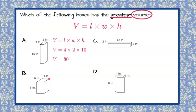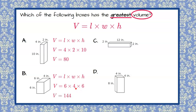Answer choice B — let's look at this prism. We're going to start with our volume formula: length times width times height. So 6 times 4 times 6. When you multiply 6 times 4 you get 24, and 24 times 6 is 144.